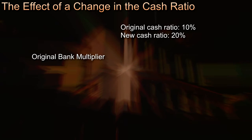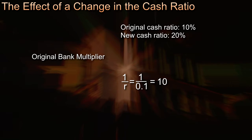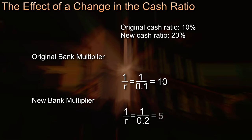Suppose the Bank of England originally allowed commercial banks to retain a 10% cash ratio, but now says they must keep a 20% cash ratio. The original bank multiplier was 1 over R equals 1 over 0.1, which equals 10 — so a cash deposit could enable banks to increase the money supply by 10 times that amount. But the new one is 1 over R equals 1 over 0.2, which equals only 5. So the power of commercial banks to create credit has been much reduced by the change in the required cash ratio.